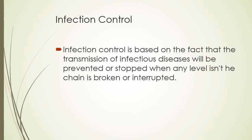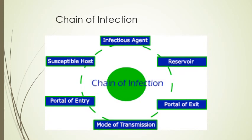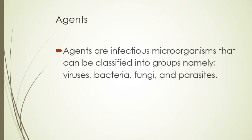Infection control is based on the fact that transmission of infectious diseases will be prevented or stopped when any link in the chain of infection is broken or interrupted. The chain includes: an infectious agent, a reservoir, a portal of exit, a mode of transmission, a portal of entry, and a susceptible host.